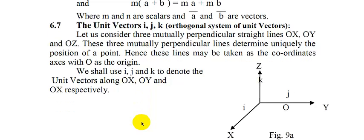Now let's study unit vectors i, j, k, or the orthogonal system of unit vectors. We consider a coordinate system in which there are three mutually perpendicular lines: OX, OY, and OZ. In this coordinate system we can determine the position of any point and each direction.